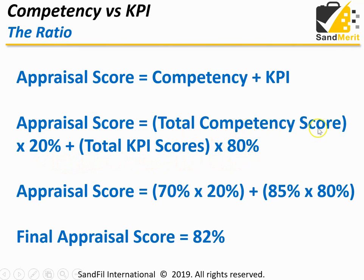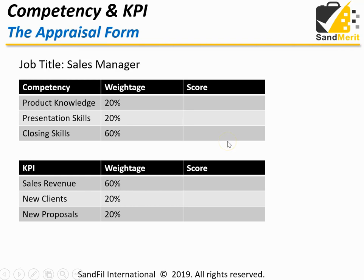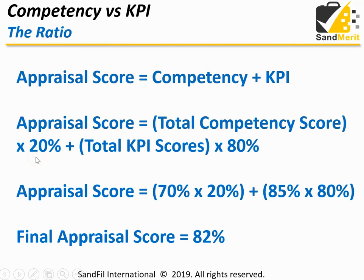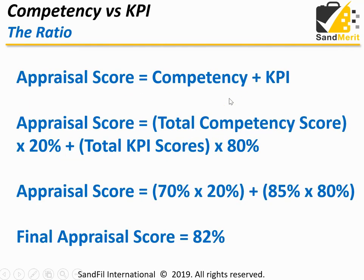To get the total competency score, look at the weightage — 20%, 20%, and 60%. You give a score, multiply by the weightage, and get a final score per item. After adding up all competency scores, you get the total competency score, then multiply by 20%. Similarly, the total KPI score is multiplied by 80%. So the final appraisal score — total competency score times 20% plus total KPI score times 80% — in this example equals 82%.